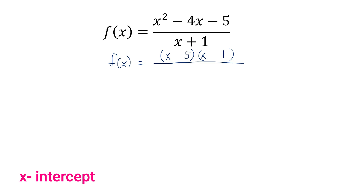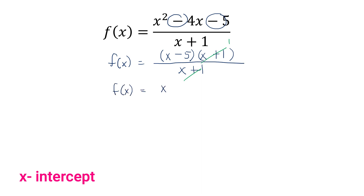Since the sign of the last term is negative, the factors 5 and 1 must have different signs. To determine which is negative, we look at the middle term. The middle term is negative, so the larger factor, 5, is negative and 1 is positive. Copying the denominator, x + 1 divided by x + 1 cancels to 1. Hence, what's left is f(x) = x − 5.